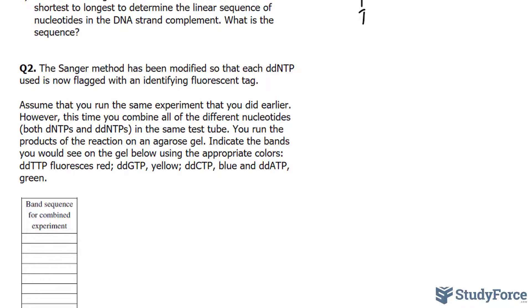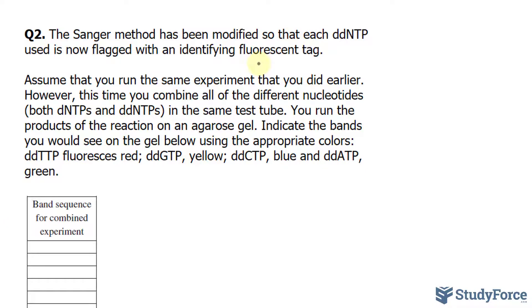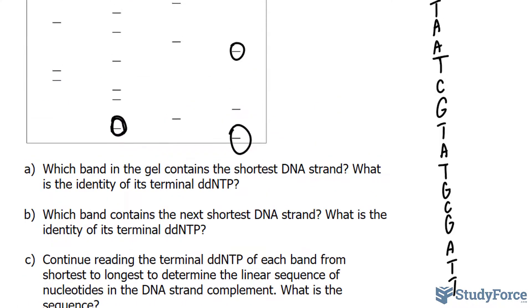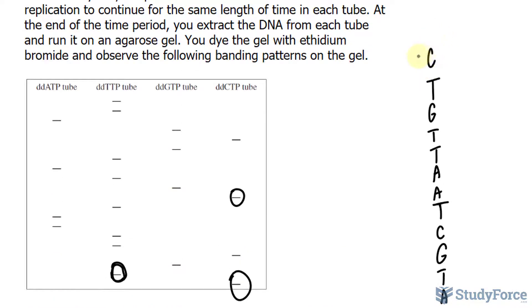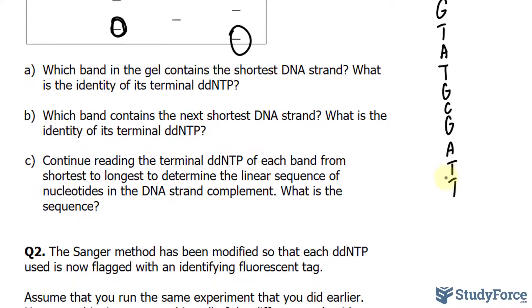The next part of the question asks: the Sanger method has been modified so that each ddNTP used is now flagged with an identifying fluorescent tag. Assume that you run the same experiment as before; however, this time you combine all of the different nucleotides — both the dNTPs and the ddNTPs — in the same test tube. You run the products of the reaction on an agarose gel. Indicate the bands you would see on the gel using the appropriate colors, where ddTTP is red, ddGDP is yellow, ddCTP is blue, and ddATP is green. The banding sequence would be the exact same as what we found before, where this is closest to the five prime end and this is the three prime end of the DNA molecule — the exact same sequence written along these rows.